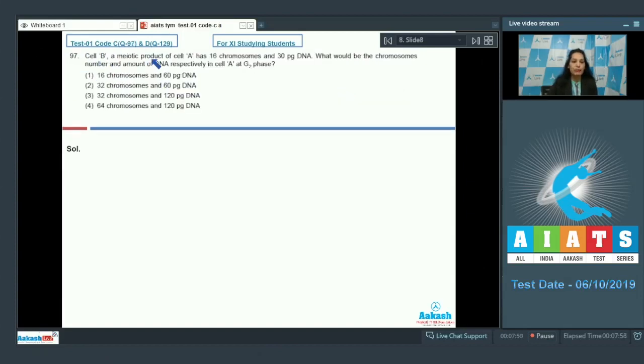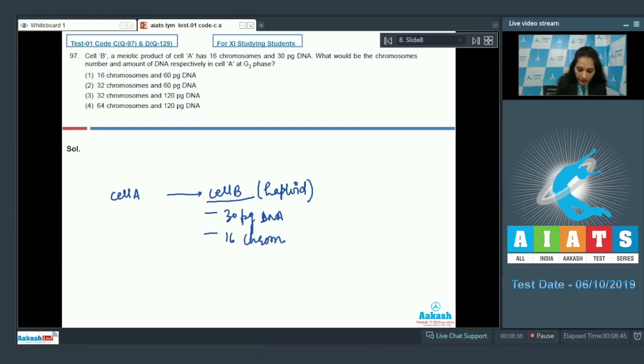Question number 97: Cell B, a meiotic product of cell A, has 16 chromosomes and 30 picogram of DNA. What would be the chromosome number and amount of DNA respectively in cell A at G2 phase? This is a very interesting question. So this is cell A, it's a meiocyte. It undergoes meiosis and forms cell B. Cell B is haploid of course because it has formed from meiotic division. Cell B has 30 picograms DNA and 16 chromosomes.